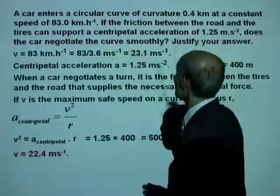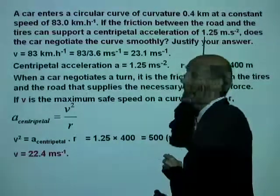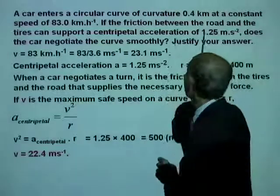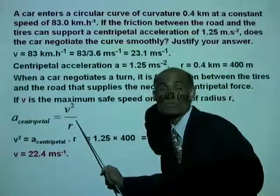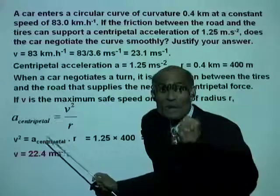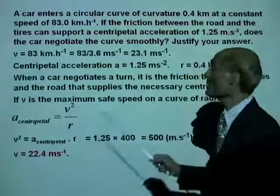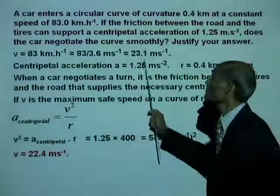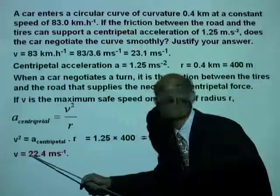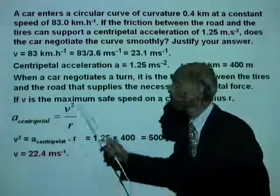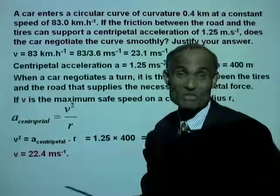The friction between the road and the tires allows a maximum centripetal acceleration of 1.25 meter per second squared for this radius, meaning you can drive up to 22.4 meter per second safely on that curve. The actual speed is 23.1 m per second. Since this exceeds the safe speed, this is not a safe speed — the car does not negotiate the curve smoothly.